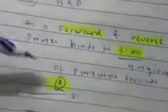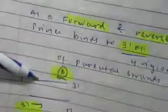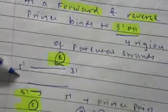In the parental DNA, five prime to three prime single-stranded DNA, if we talk about, then the forward primer particularly binds to the three prime region of DNA.